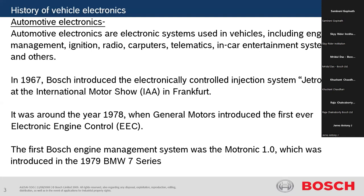Before vehicle electronics, all things were totally mechanical. It was the year 1966 when this all started from Bosch's side — Bosch introduced an electronically controlled injection system called the Jetronic system, which we still call by that name, presented at the International Motor Show IAA in Frankfurt, Germany. After that, 1978 came when General Motors introduced the first ever electronic engine control system in a vehicle, taking nearly 10 to 11 years from concept to market.